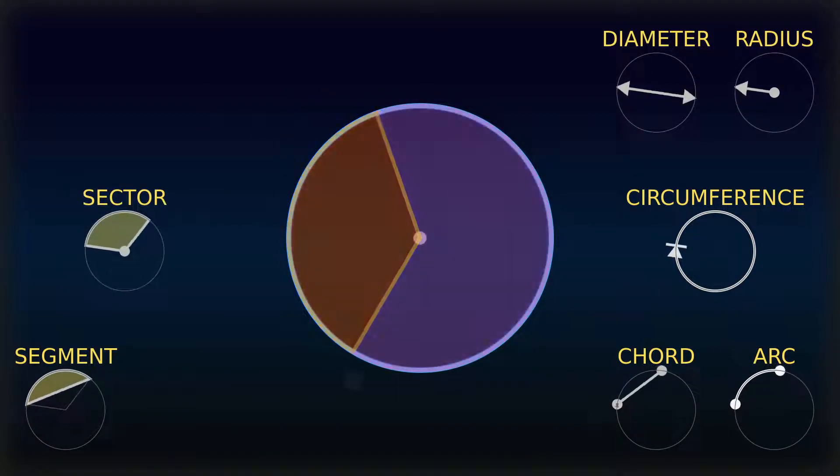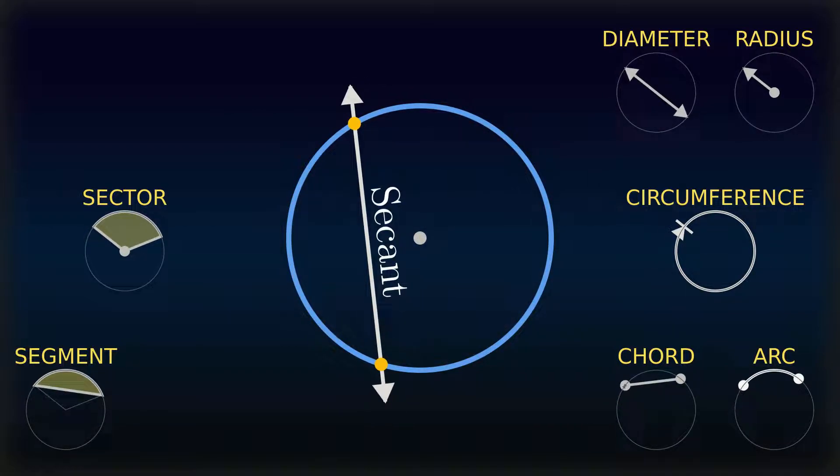A secant is an extended chord, a coplanar straight line intersecting a circle in two points.